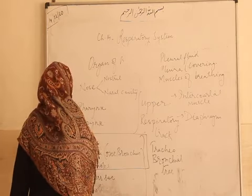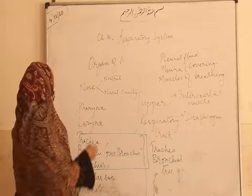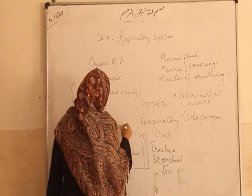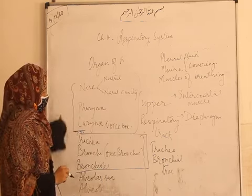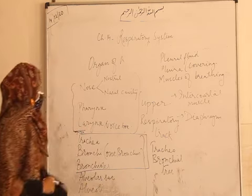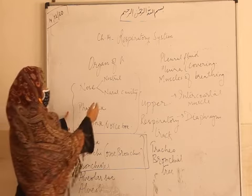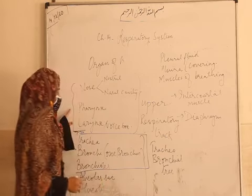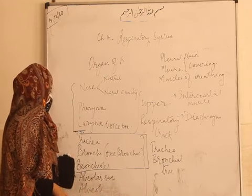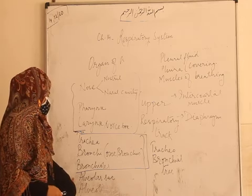From the trachea downward, all parts come into the lower respiratory tract. The upper respiratory tract goes up to the larynx, or voice box. The parts of the respiratory system are: nose with nostrils and nasal cavity, pharynx, larynx, trachea, bronchi, bronchioles, alveoli, and alveolar sac — which is actually a bunch of alveoli.